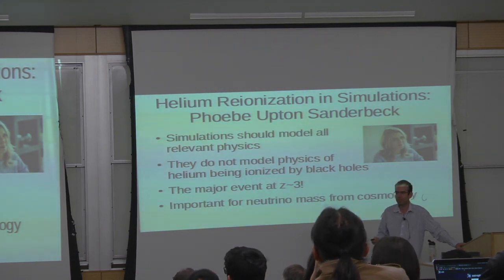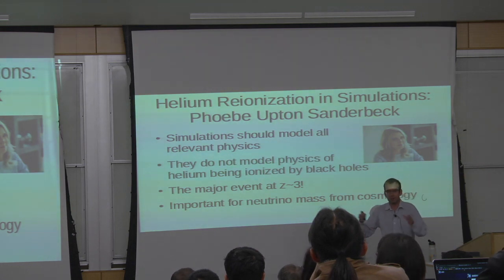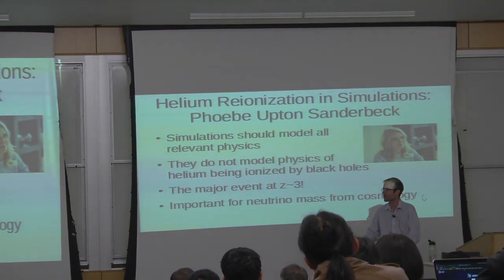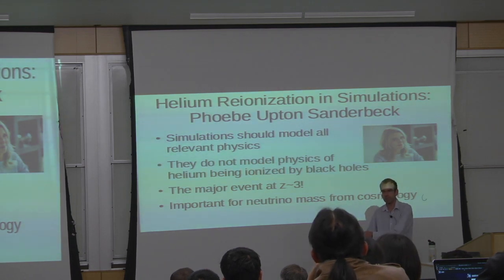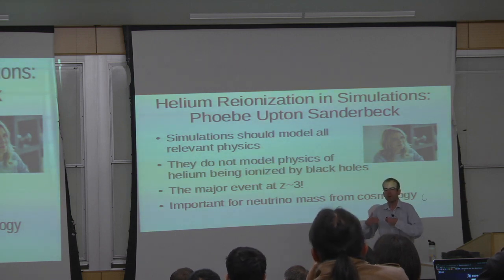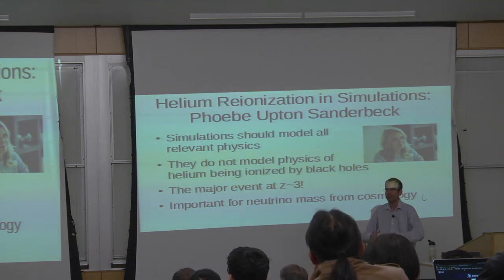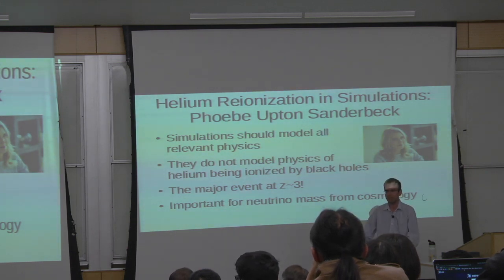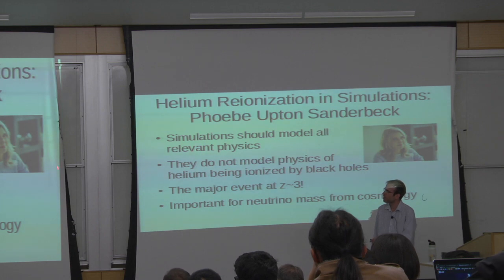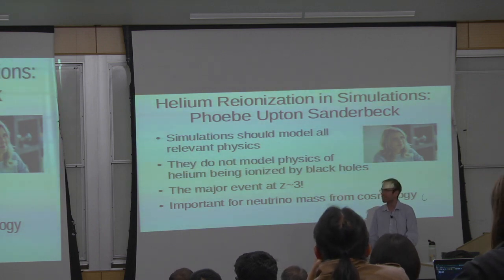One of the things I'm particularly interested in is using cosmological simulations to measure the neutrino mass. To do this, you need to build a simulation of the universe at a redshift of roughly three to four billion years ago and compare it to the real observed universe. However, the simulations we use lack a model for the ionization and heating of helium in the universe due to ionization from quasars — the most important thing that happens to the universe at about redshift three. Phoebe turns out to be an expert on this particular process.